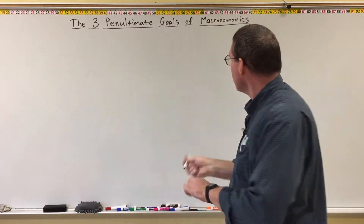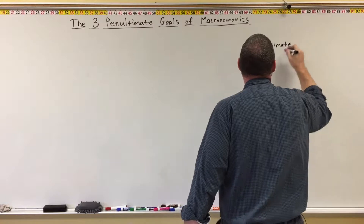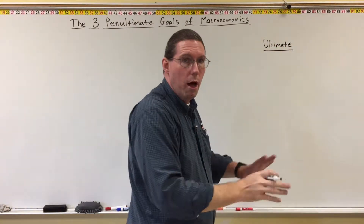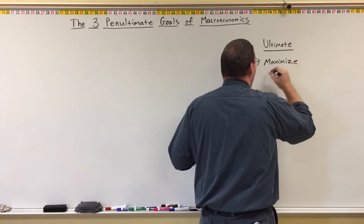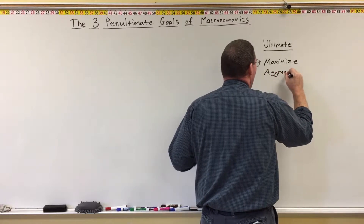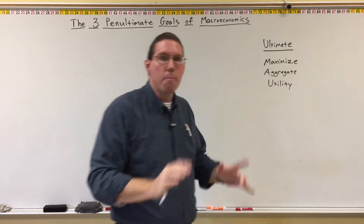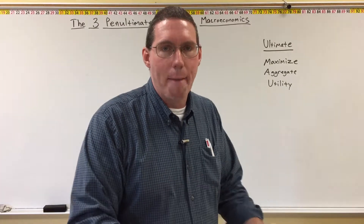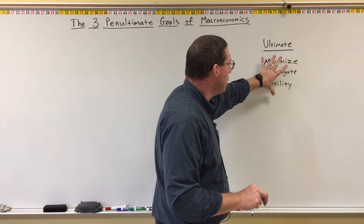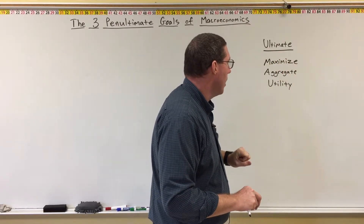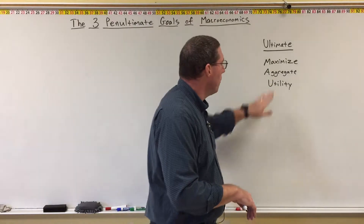So here's what I mean. The ultimate goal — the final thing we are going for in macroeconomics — is to maximize aggregate utility. That is what we want: as much enjoyment, satisfaction, and happiness in society as possible. This is our ultimate goal. However, this is a very abstract concept, and it is difficult to measure aggregate utility.